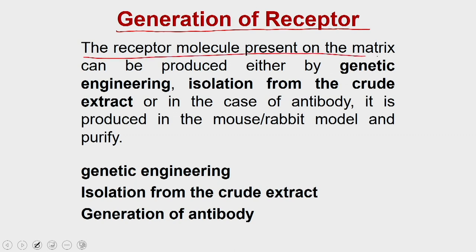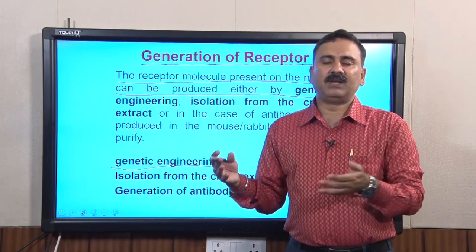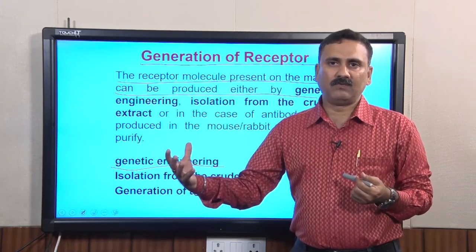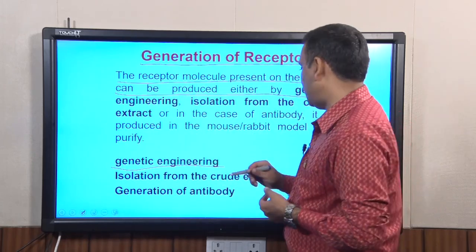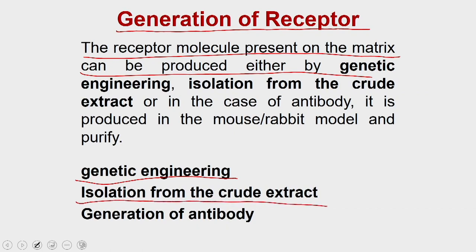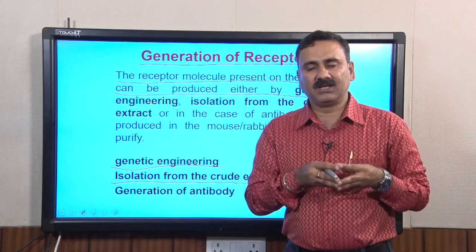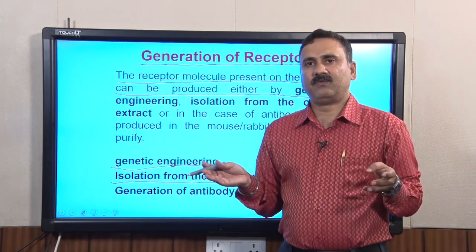The receptor molecule present on the matrix can be produced by three methods. One is called genetic engineering, which means you can clone that particular receptor into a bacterial or eukaryotic expression system, and that will allow you to overexpress this protein into the host, and then you can purify that protein using different chromatography techniques. The second option is that you have the receptor in the crude extract and then use chromatography techniques to purify it.